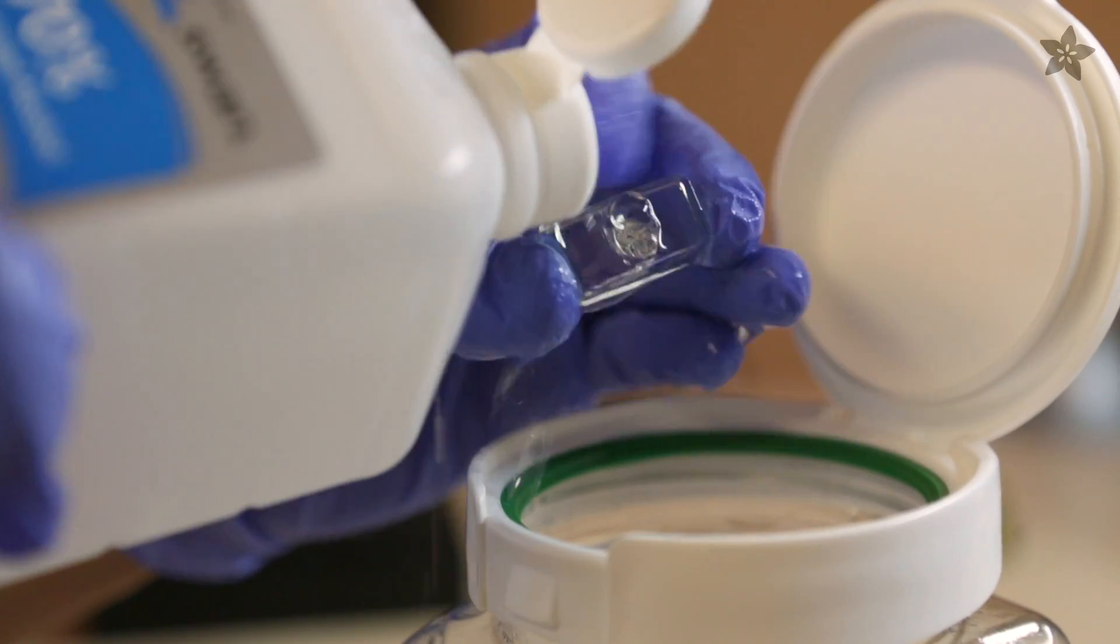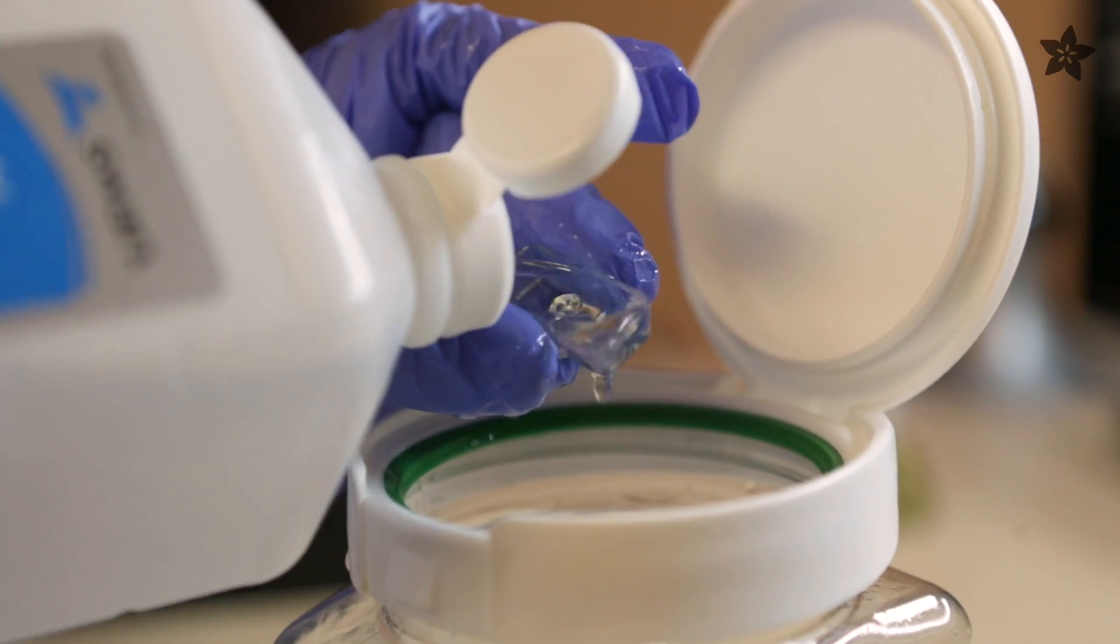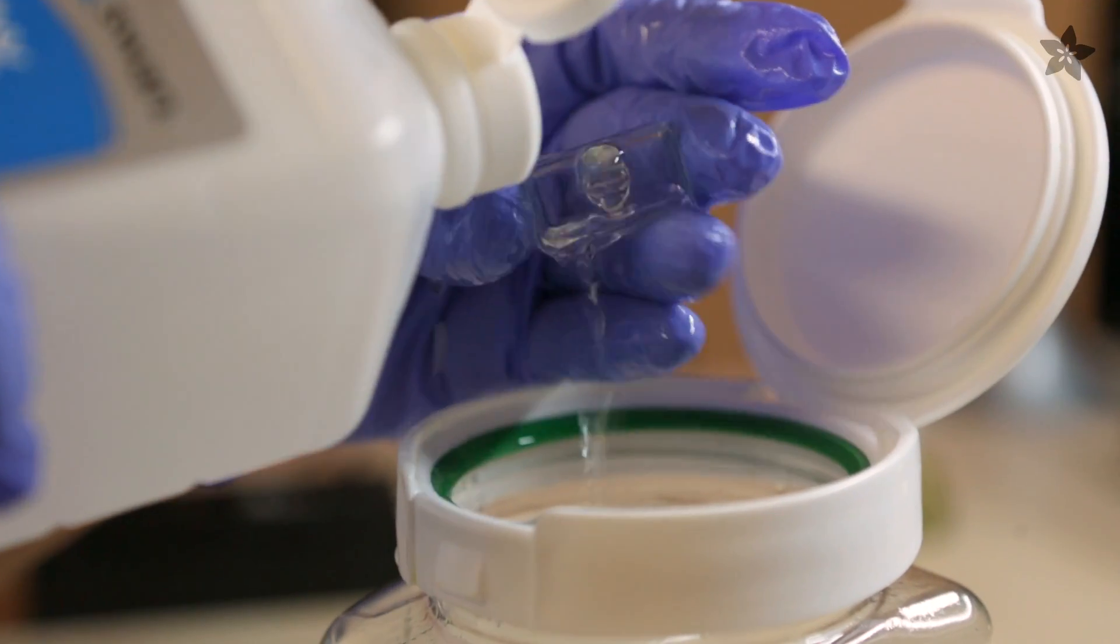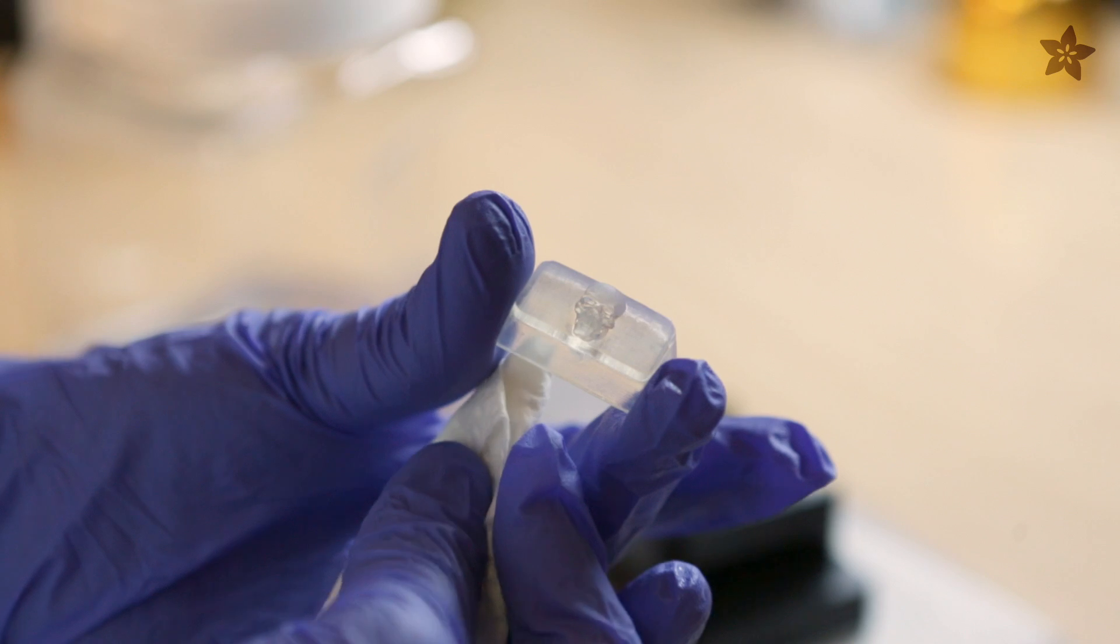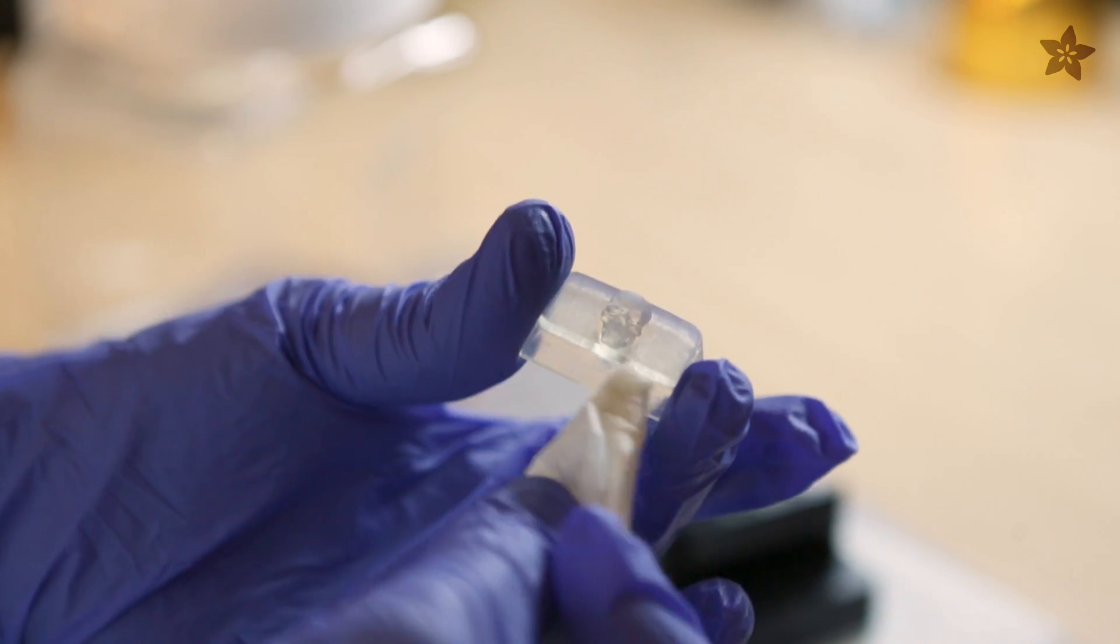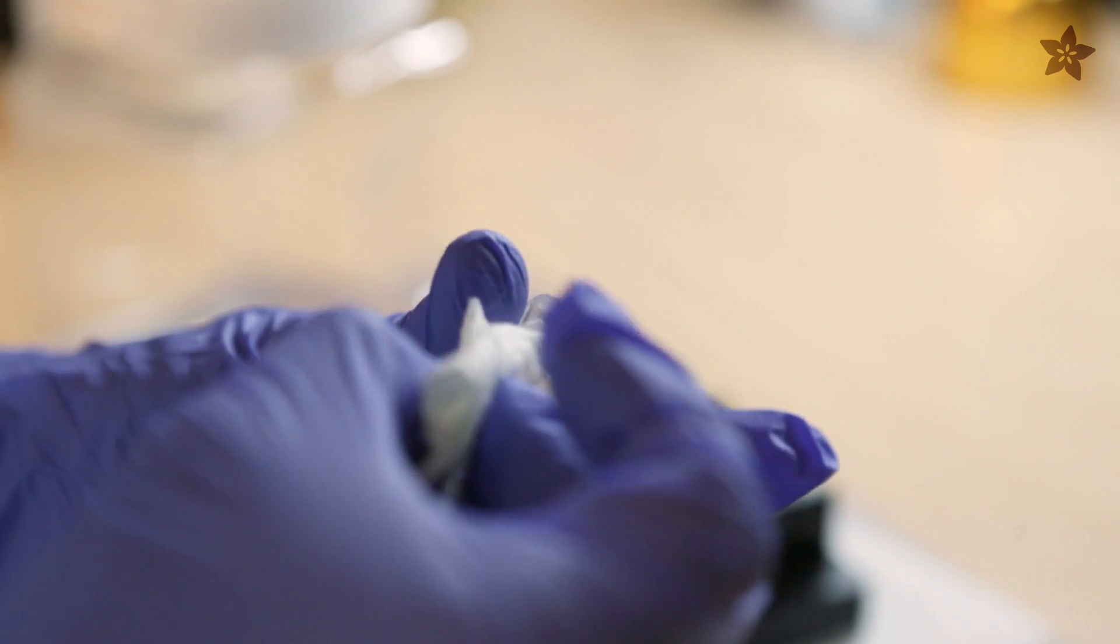To cure the part, we'll pour some alcohol over the keycap, and this will help harden the material, making sure that we get the insides as well. Then we'll pat it down with a paper towel, and we'll let it dry for about 10 minutes so that it fully cures.